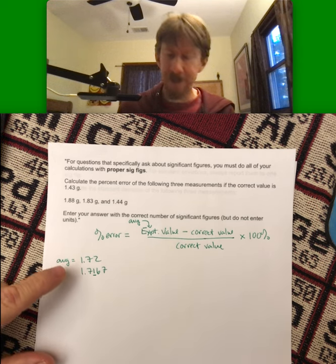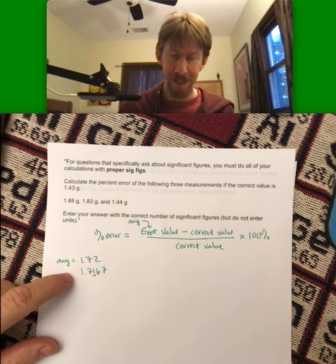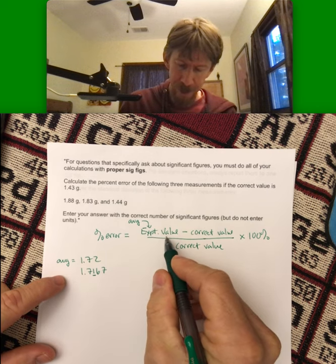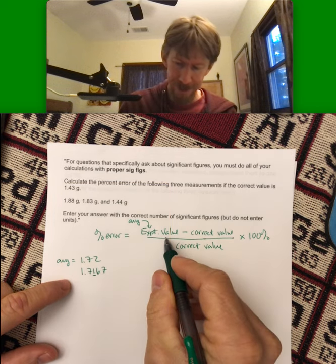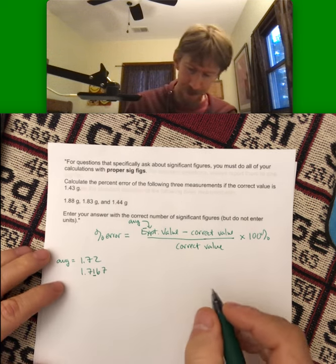This is particularly important for the lab to keep track of sig figs. So that's my average experiment. My correct value, well again we could use either the 1.72 or the 1.7167. I tend to use the 1.72 so that's what I'll do.